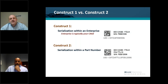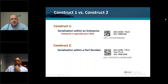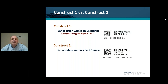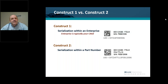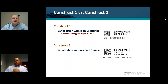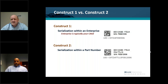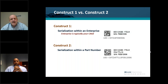The first thing we want to talk about with a UID label or IUID compliance under MIL-Standard 130 is the foundation of the label, which is the data. The data for a Construct 1 formatted label would be your cage code and serial number. For a Construct 2 formatted label, the data is made up of the cage code, part number, and serial number. In Construct 1, you're serialized at the enterprise level, which is usually the cage code — though in some occasions it could be a Dun's number. In Construct 2, you're serialized at the part number level.